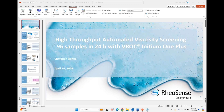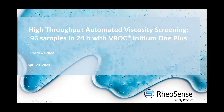Thank you very much for attending this webinar on high throughput automated viscosity screening with Initium One Plus. This gives you the ability to run 96 samples in under 24 hours. Before going into the high throughput screening mode for Initium One, I'd like to give a short review on viscosity.